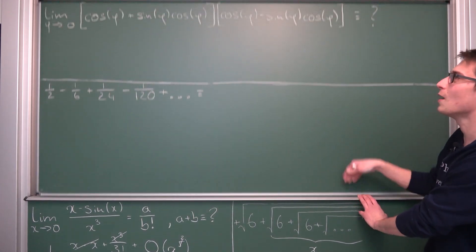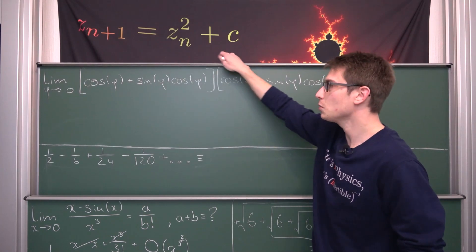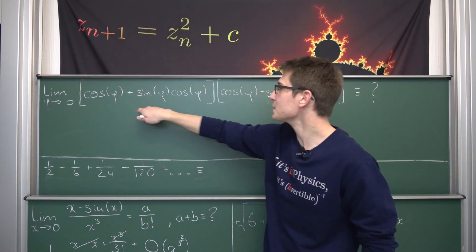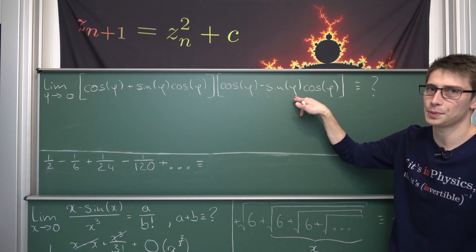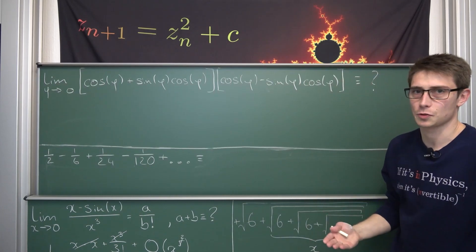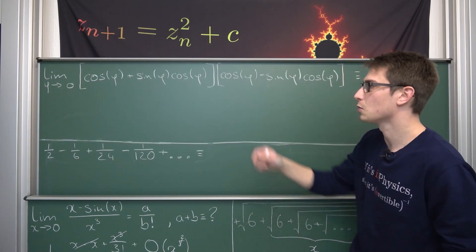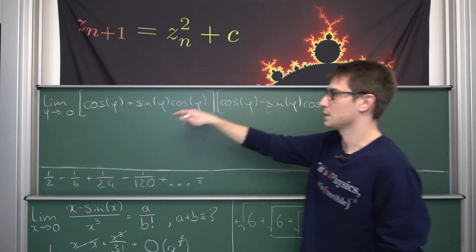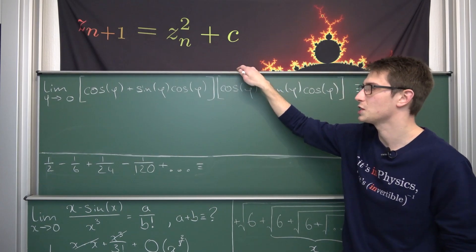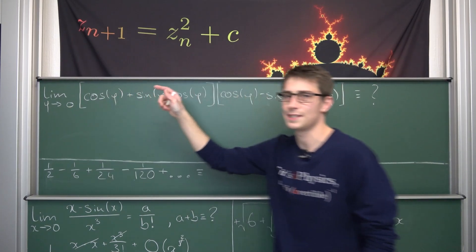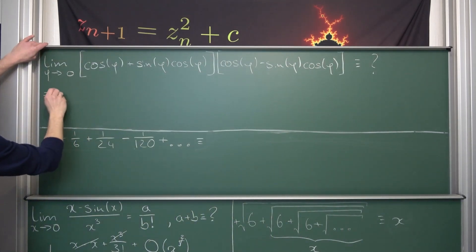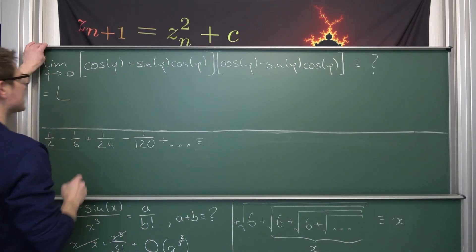Now next up is the limit as our angle phi approaches zero of, well, we have something of the form a plus b times a minus b. This just screams basically for using the difference of two squares. You don't have to use the difference of two squares here because if the limits exist, and they do because cosine and sine they are all bounded and the multiplication also, everything is going to converge nicely. You can also just distribute the limits into everything. But let's make it a little bit more elegant here by taking the difference of two squares.